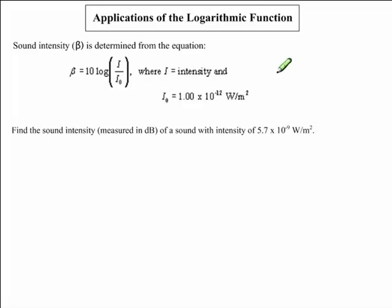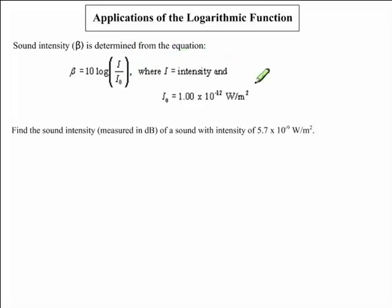In this mini clip, we will be discussing the applications of the logarithmic function as we answer this question. The sound intensity beta is determined from the equation beta equal to 10 times the logarithmic function of i divided by i0, where i is the intensity and i0 is equal to 1.00 times 10 to the exponent negative 12 watts per meter squared.